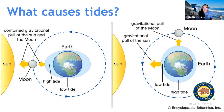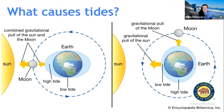When the water recedes at its lower level in the tide cycle, that's what we call low tide — a really great time to go tide pooling. And when it reaches its highest level, that's high tide. Today we're going to be focusing on a special type of tide called a king tide.